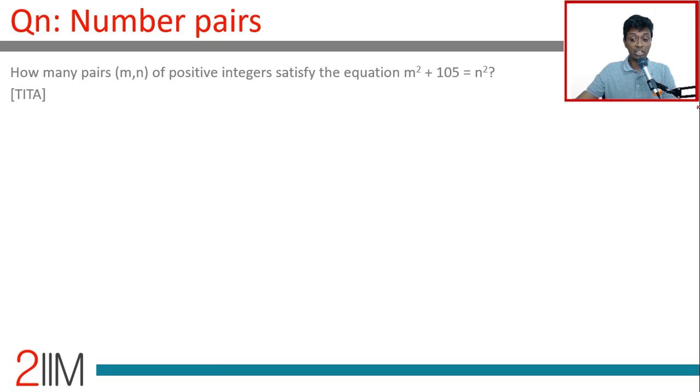Number pairs: How many pairs (m, n) of positive integers satisfy the equation m² + 105 = n²? To start with integers and positive integers, we talk about natural numbers. First step, we write this